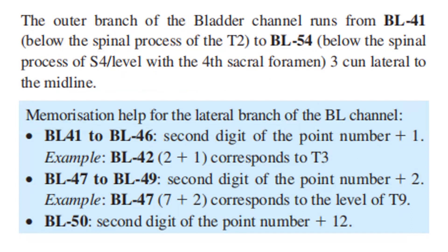Memorization help for the lateral branch: Bladder 41 to Bladder 46, the second digit of the point number plus 1 gives the thoracic level. For example, Bladder 42: 2 plus 1 corresponds to T3. Bladder 47 to Bladder 49, second digit plus 2. For example, Bladder 47: 7 plus 2 corresponds to T9. Bladder 50: second digit of the point number plus 12.